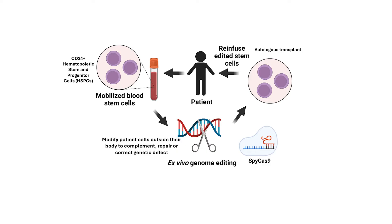After the cells are harvested from the patient, they will essentially be treated with Cas9 nuclease. The way that's done is a process of electroporation — you mix the cells with the Cas9 protein and the RNA that programs it to go to a specific address in the genome. You give a quick pulse of electricity, which shocks the cells and opens up small holes so the protein can get in. It goes into the cell nucleus and finds the location in the genome where it's supposed to act, based on the programmed RNA, and it will cut the DNA.